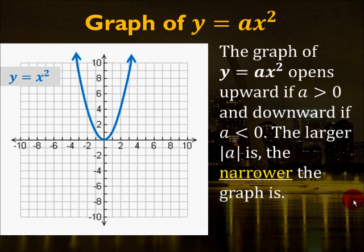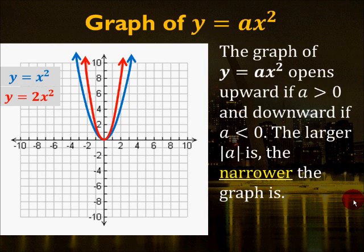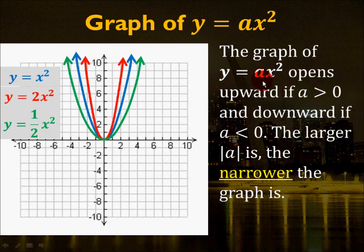Here's the graph of y equals ax squared. The coefficient a determines the shape. The graph opens upward if a is greater than zero, and downward if a is less than zero. The larger the absolute value of a, the narrower the graph is. Here you have the standard graph of y equals x squared in blue. If we graph y equals 2x squared, the absolute value of a went from 1 to 2, so the parabola is narrower. For y equals one-half x squared in green, it's wider than the original blue graph. So the absolute value of a tells you whether the graph is wide or narrow — closer to zero means wider, farther from zero means narrower.